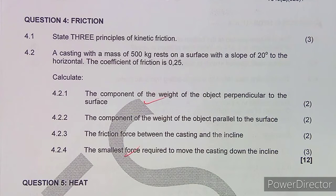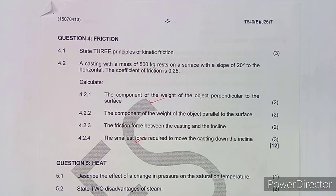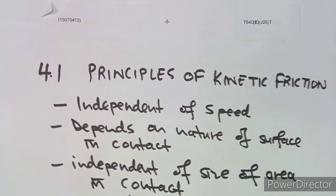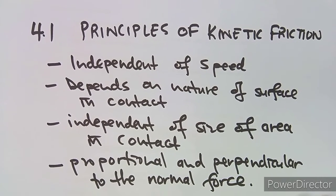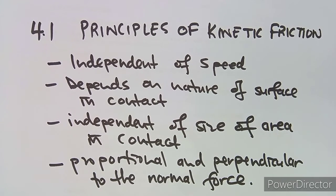The first question was to state the three principles of kinetic friction — that is three marks. As I explained previously, these are the principles they need you to know: independent of speed, depends on the nature of the surface in contact, independent of the size of area in contact, and proportional and perpendicular to the normal force. There are actually four, so you can pick any three of your choice.